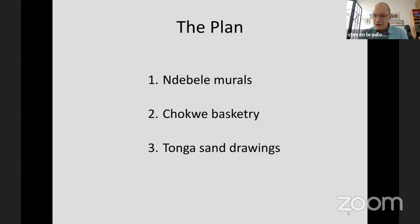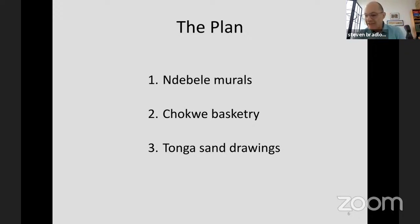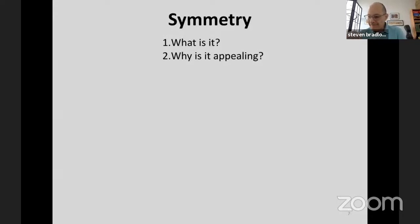My plan is to show you three different examples of decorative arts or practices from African culture where math plays a role. All of them display an order that we'd want to describe as symmetry, though in the third example we'll see some unexpected other mathematical ideas also enter. So let me begin with the idea of symmetry. Among the first questions you might ask are: what exactly is it, and what is it about symmetry that we find appealing? Mathematics is very good at formulating a precise answer to the first question.